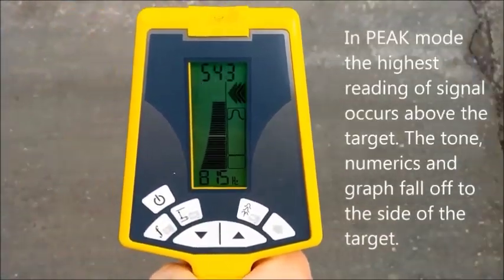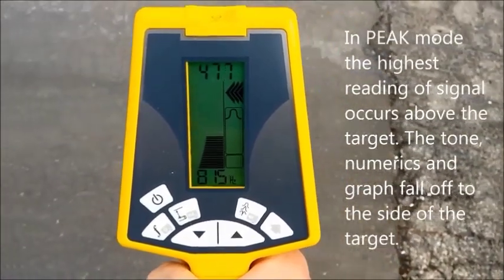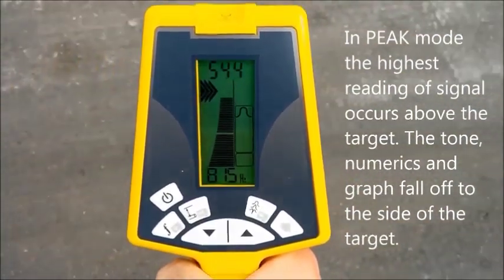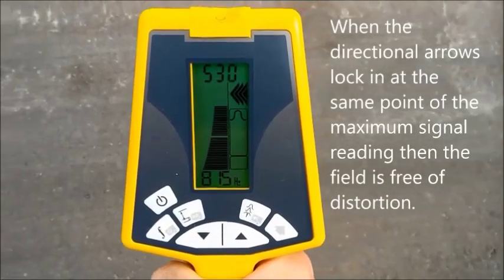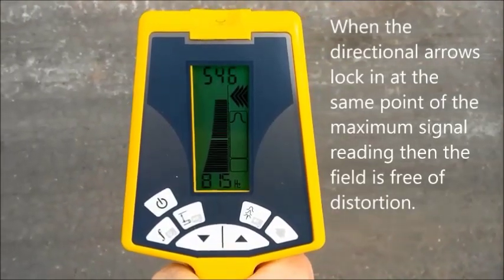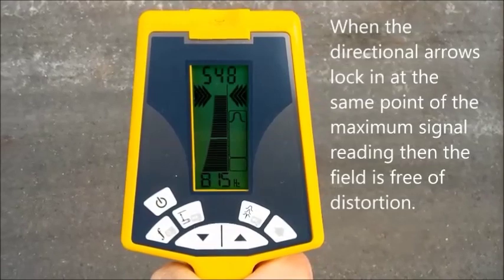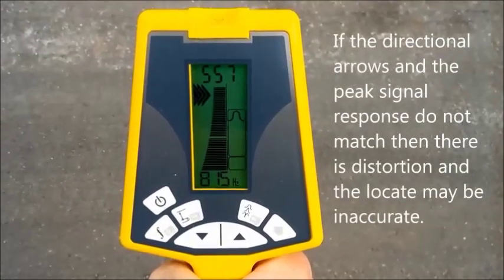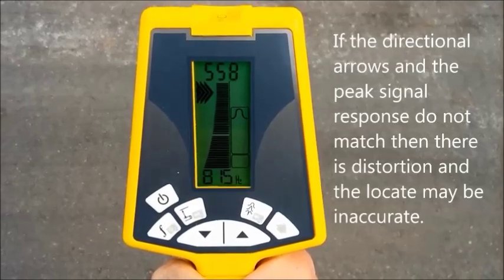In peak mode, the highest reading of signal occurs above the target. The tone, numerics, and graph fall off to the side of the target conductor. When the directional arrows lock in at the same point of the maximum signal reading, then the field is free of distortion. If the directional arrows in the peak signal response do not match, then there is distortion and the locate may be inaccurate.